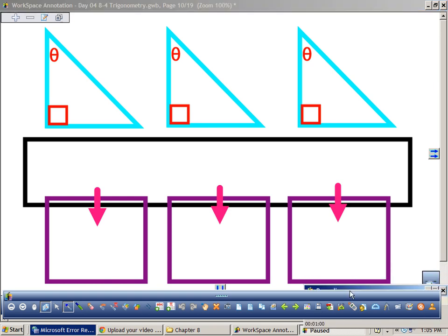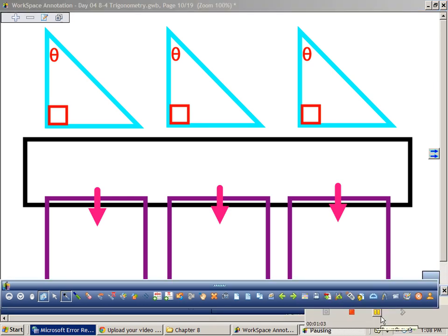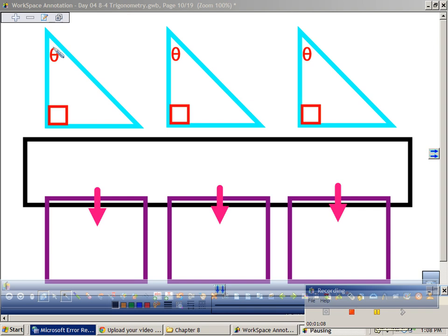So go ahead and copy down my diagram here. Let's start with describing these three right triangles. So first of all, what did I say? If I'm talking, if this is the angle that we're referencing, what would we call this leg of the triangle? Adjacent. What would this leg be called? Opposite. And what would we call this right here? This is the hypotenuse.